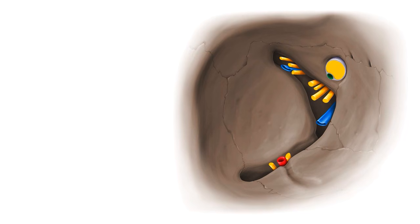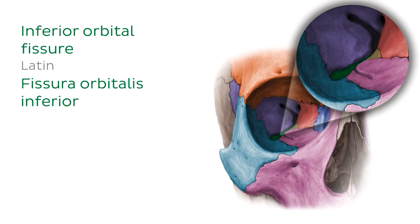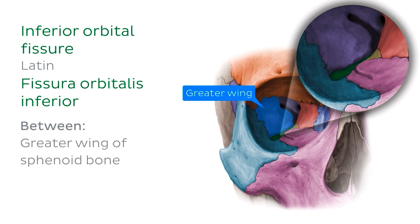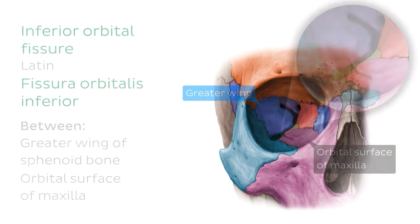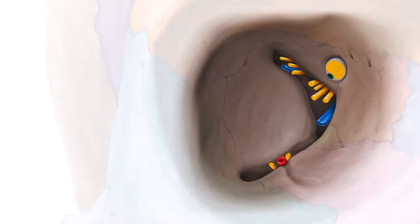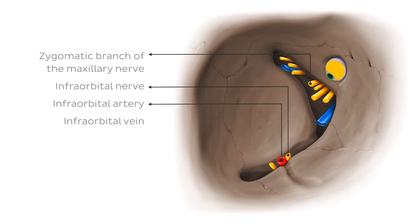Since we have a superior orbital fissure, we also have an inferior orbital fissure. It is formed largely by the opening found between the greater wing of the sphenoid bone and the orbital surface of the maxilla. It too transmits several structures, such as the zygomatic branch of the maxillary nerve, the infraorbital nerve, and the infraorbital artery and vein, which is a branch of the inferior ophthalmic vein.